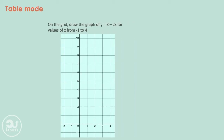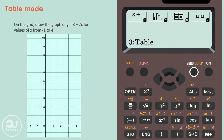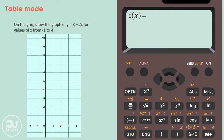On your calculator, press the mode or menu button and press the number that represents the table mode, or navigate to it using the arrow keys on the calculator. Now, all we do is type the equation after the equals symbol, so 8 minus 2x. To get the x variable, we press alpha and the right bracket button.